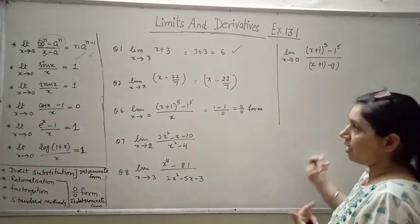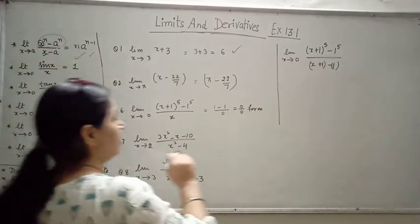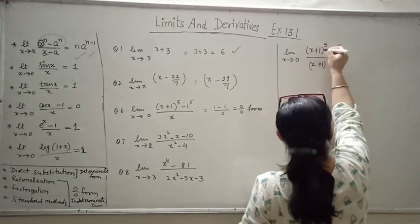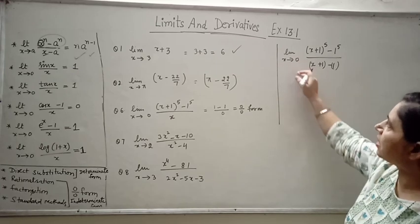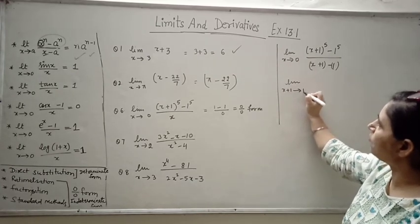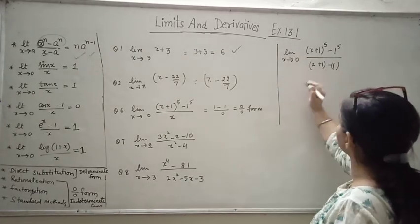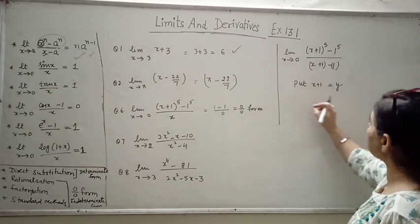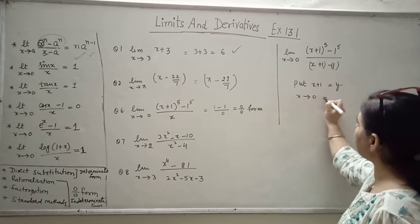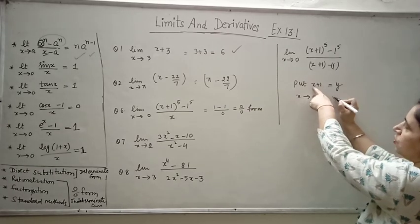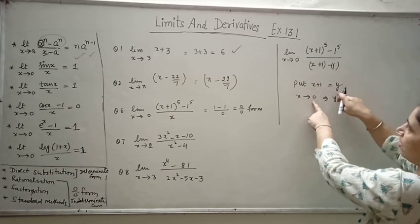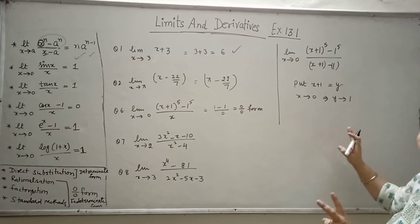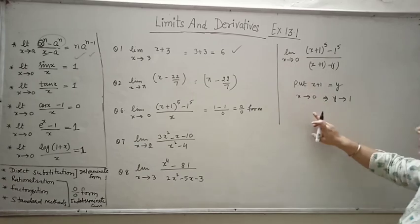So we apply the substitution: put x plus 1 equal to y. When x is tending to 0, y is tending to 1. Everywhere x appears, it is replaced: x plus 1 becomes y, and x becomes y minus 1. So the limit becomes y tending to 1, with expression y raised to power 5 minus 1 raised to power 5, divided by y minus 1.